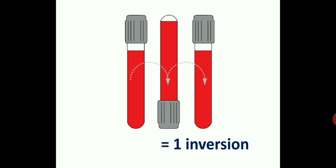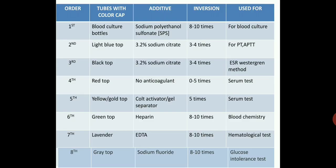First, we collect blood culture bottles, which contain the additive sodium polyanethole sulfonate (SPS). These should be inverted 8 to 10 times. Blood culture bottles are used for blood culture testing.